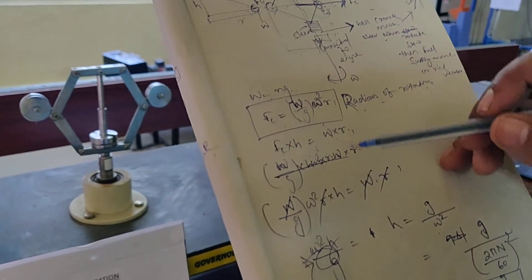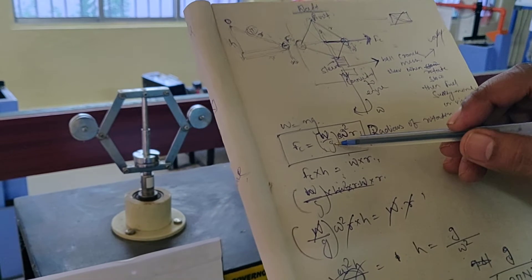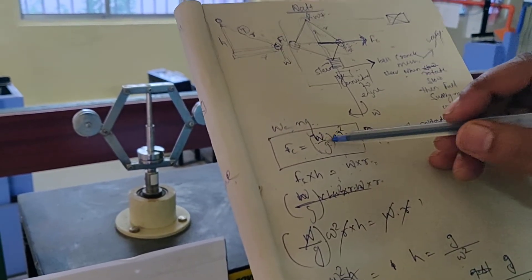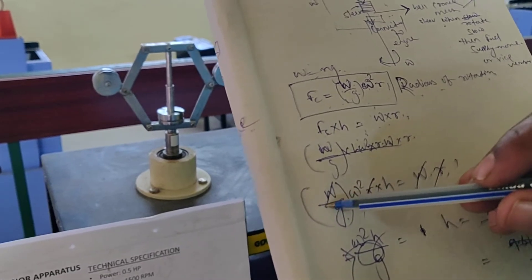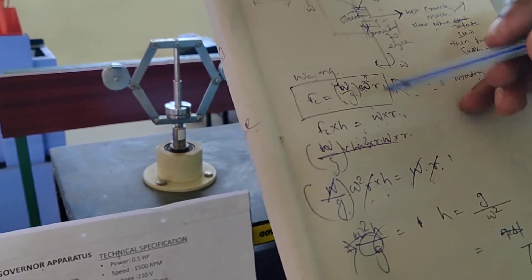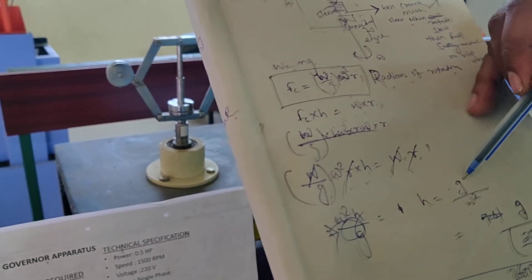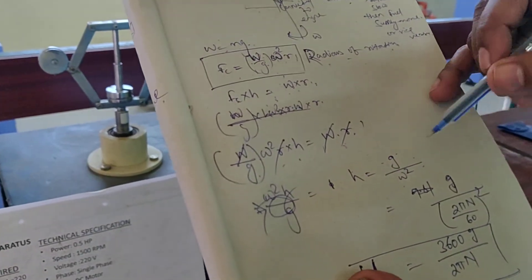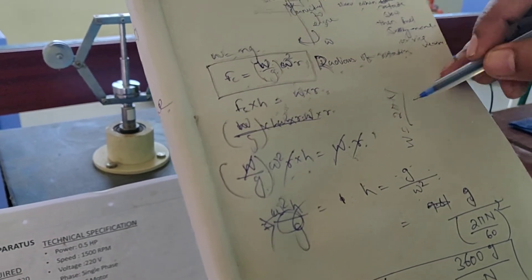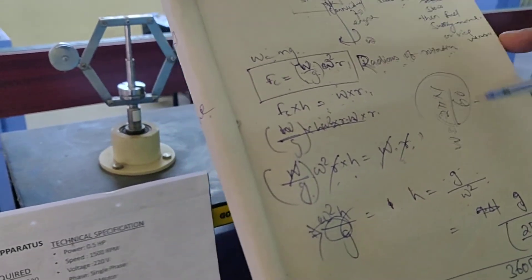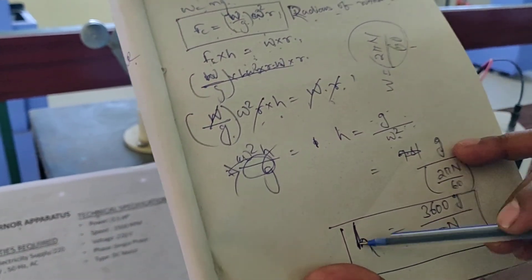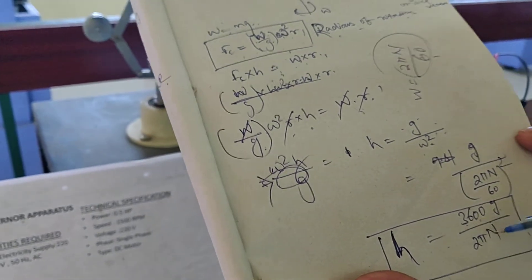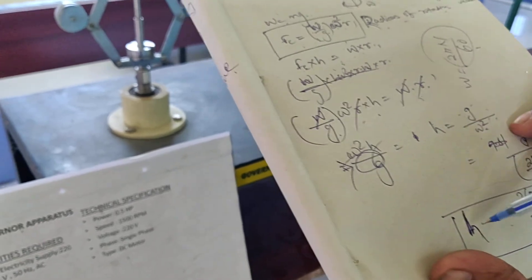So we have Fc × H = W × R. Substituting Fc = (W / G) × ω² × R into this equation, we get (W / G) × ω² × R × H = W × R. Cancelling W and R from both sides, we finally get the relation H = G / ω². We also write ω = 2πN / 60. Substituting this value of ω, we finally get H = (3600 × G) / (2πN)² — this is the final relation for the height H.